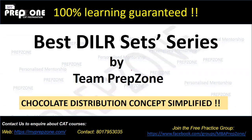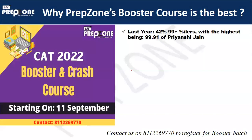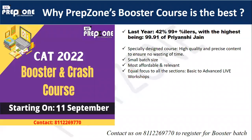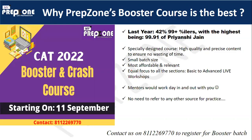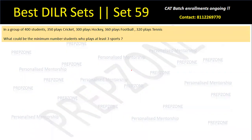Hi everyone. Welcome back to the Best Aladia Set Series. Today we will be discussing part number two, or maybe an application of the chocolate distribution concept that I explained in the last set. All those students who have not watched my last video, go back, watch the last video and only then solve the set, else this will not make any sense to you. This is set number two of chocolate distribution, or we can call it Venn Diagram optimization techniques as well. Very important — I'm trying to cover at least three to four sets on this particular application.